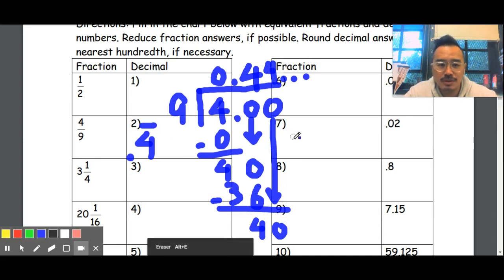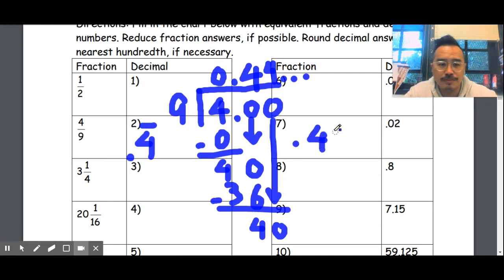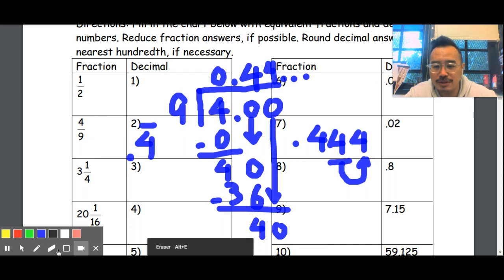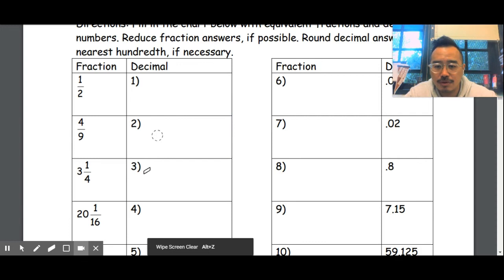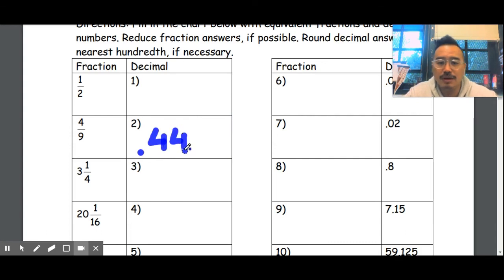So what we're going to do is, it's going to say 444, right. Round to the nearest hundredth, so we go to the thousandth place. Take a look at this. All right, so look at the number four. So we're going to round it, so 0.44 is actually the answer. 0.44 is the answer.